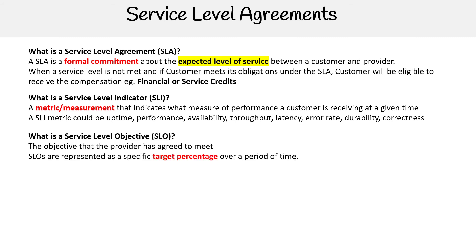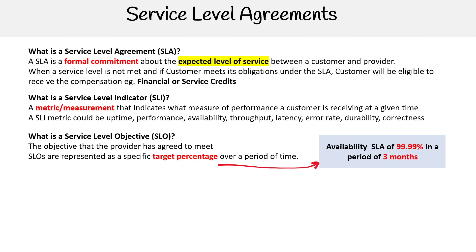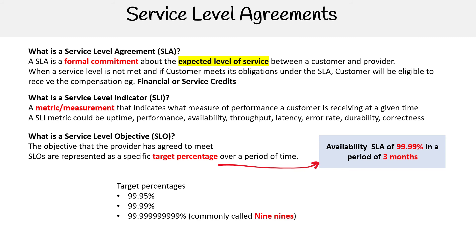Then you have SLOs, service level objectives — that is the objective that the provider has agreed to meet. SLOs are represented as a specific target percentage over a period of time. An example could be an availability SLA of 99.99% over a period of three months. Target percentages you commonly see are 99.95%, 99.99%, and 99.9999999999%.